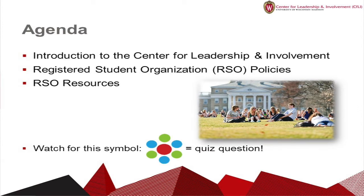Through this orientation we will talk about several different topics. We will start by sharing more about the Center for Leadership and Involvement, or CFLY. Our office not only reviews student organization applications, but can serve as a resource for your group and can also provide various trainings and services. Second, we will review a select few registered student organization, or RSO, policies while providing you with a connection on where to find the remainder of the policies. Finally, we will talk about some important resources that are available to RSOs.